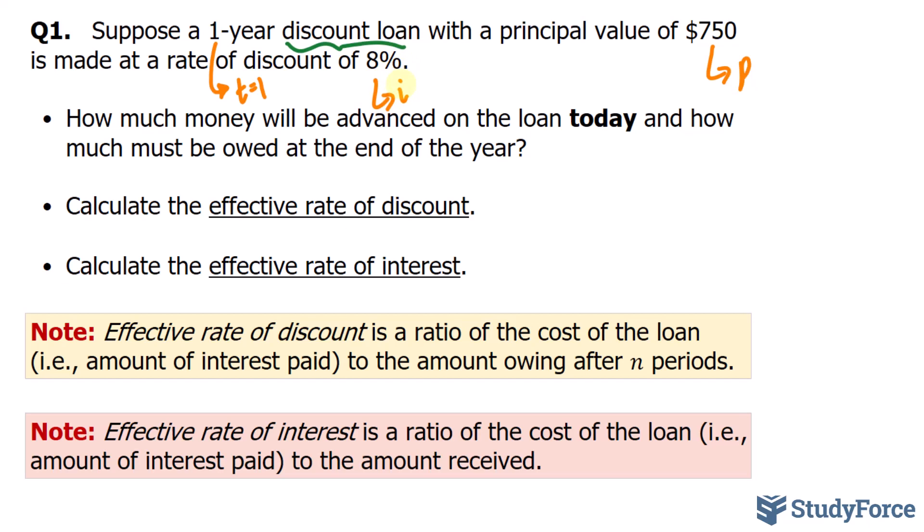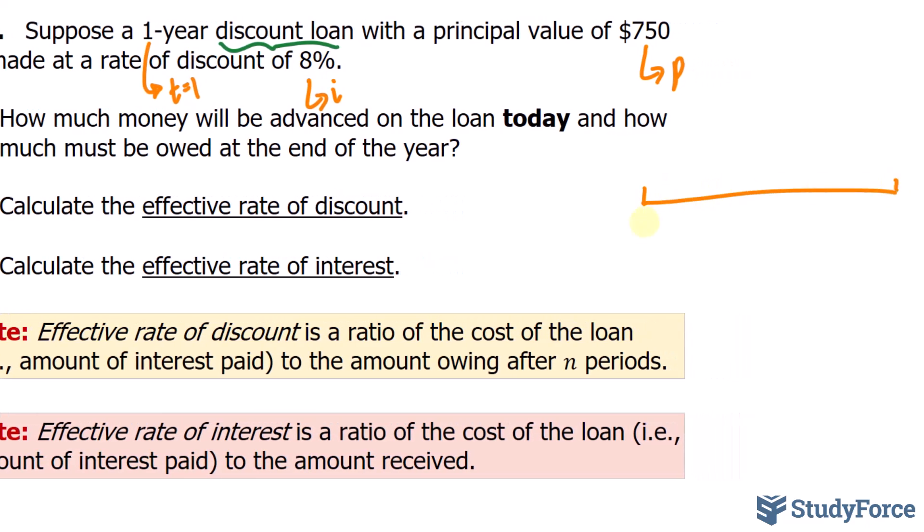To find out how much will be advanced today, and how much must be owed at the end of the year, let's create a quick timeline. At time zero, we'll calculate how much will be advanced today, but we know that within one year time, you will have to pay back $750. To find out this amount, we first have to calculate the interest.